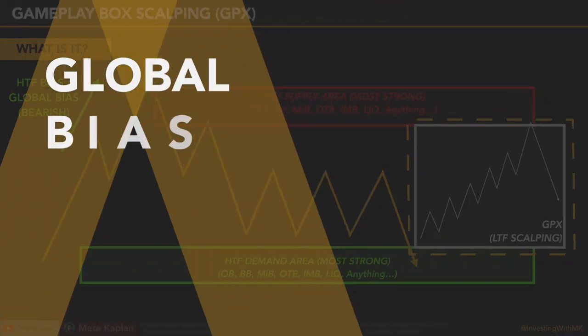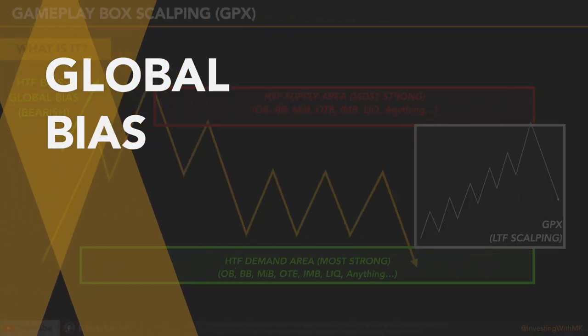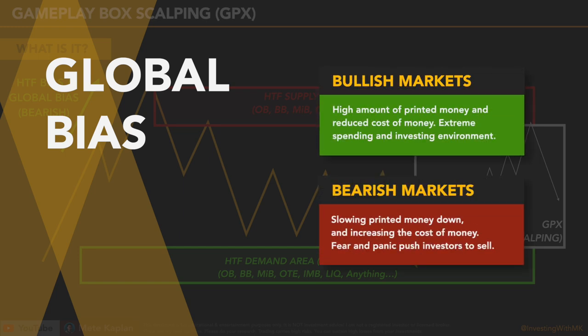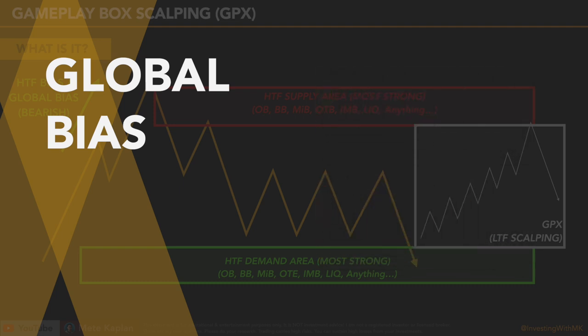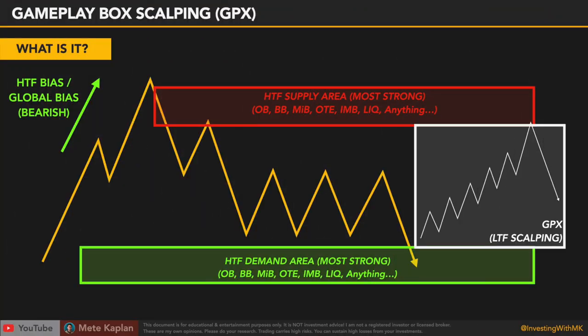One other thing that I do is follow the direction of global bias if I am up to scalping. When the government keeps printing money and the cost of money is cheap, I enjoy looking at bullish positions, because there will be so much cheap money in circulation. If they stop printing money and increase interest rates, I look for more bearish positions. People will be in fear and start selling and taking profits from their investments. This is how I plan my trades.